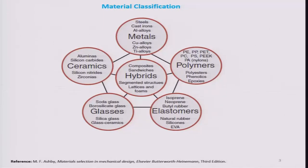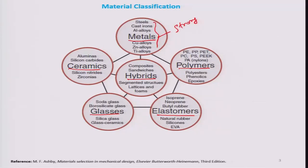In material classification, there are a variety of materials available in our universe, broadly classified into these groups: metals, polymers, ceramics, glasses, elastomers, and hybrids. Metals are generally crystalline in nature, and their atoms are held together by metallic bonding. These metals are very strong and hard; some materials are ductile and some are very brittle in nature.